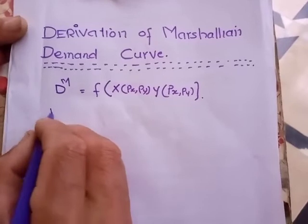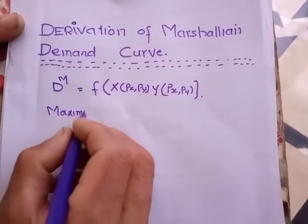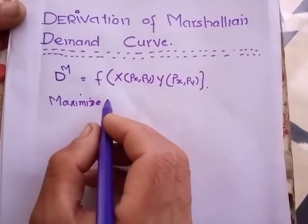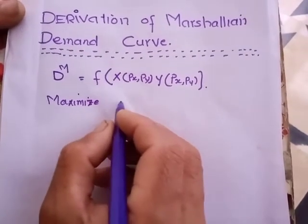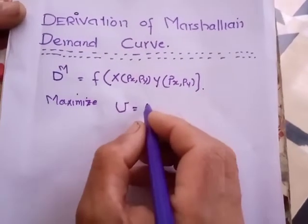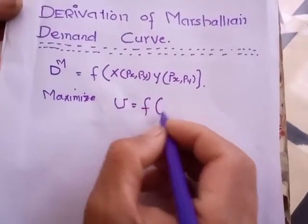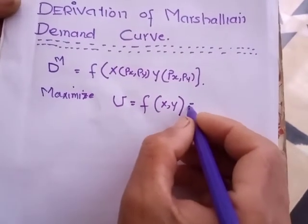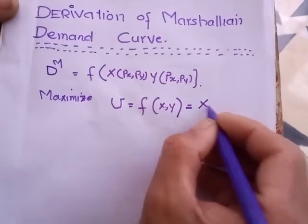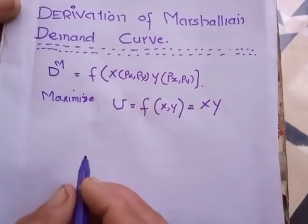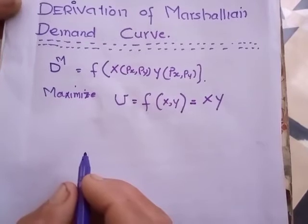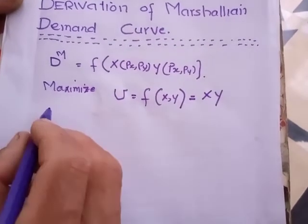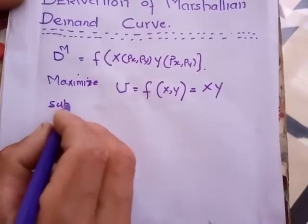Mathematically we have two functions. First function is called objective function in which we maximize the objective function. As our objective is to maximize utility, so utility is a function of x and y. We may write it in specific form as xy, which is the quadratic form of equation.